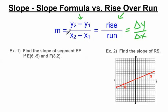There are certain situations where it's best to use the slope formula, and certain situations where I think it's best to use the rise over run equation. Let's look at these two examples here. Example one: find the slope of segment EF if E is 6, negative 5, and F is 8, 2.